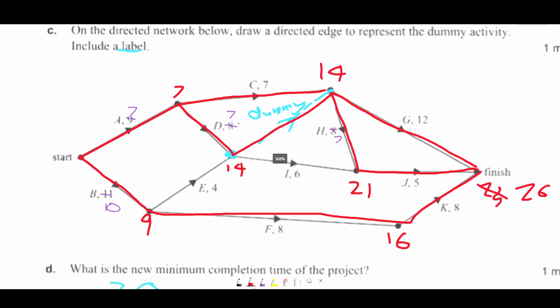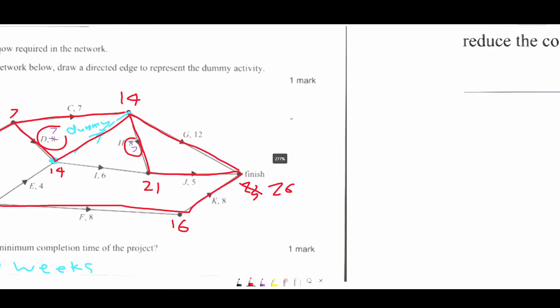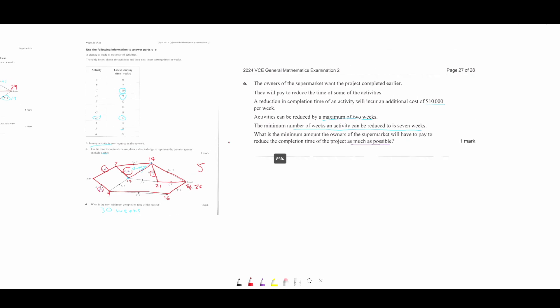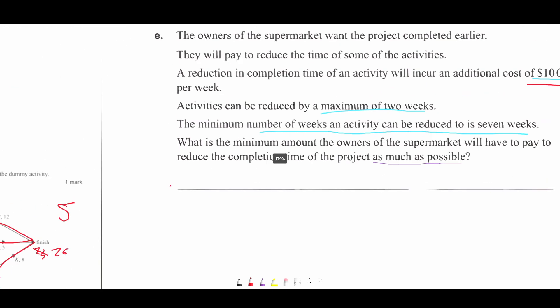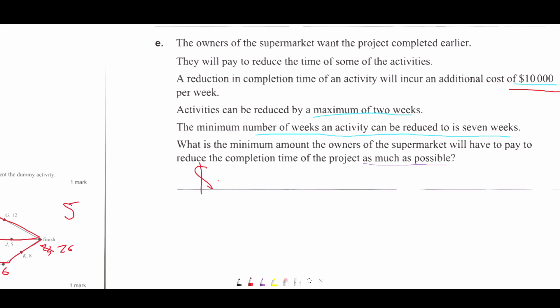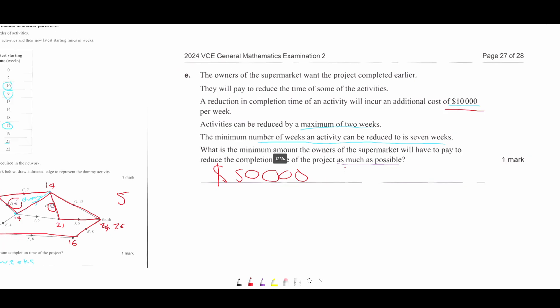So now let's just count how many reductions we've made. We've made one here, two here, one here, one here. So one plus two plus three, four, five. We've made five reductions. And they said that it costs $10,000 per reduction. So five times 10,000 is 50,000. So $50,000. That's going to be our minimum amount that we'll have to pay to reduce the completion time as much as possible.